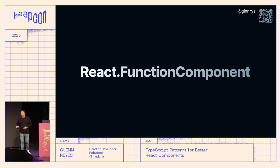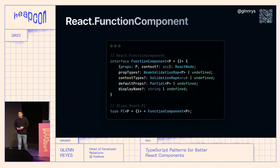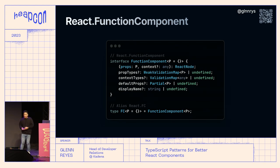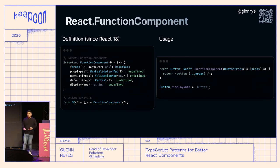Now let's talk about the React.FunctionComponent type. It has been around since the beginning but changed over time. Since React 18, they changed it so it no longer implicitly adds a children prop — instead it now optionally includes displayName or propTypes, which is super handy if you want to provide a display name to your component for DevTools, when building a library, or for anonymous functions you want named in DevTools.